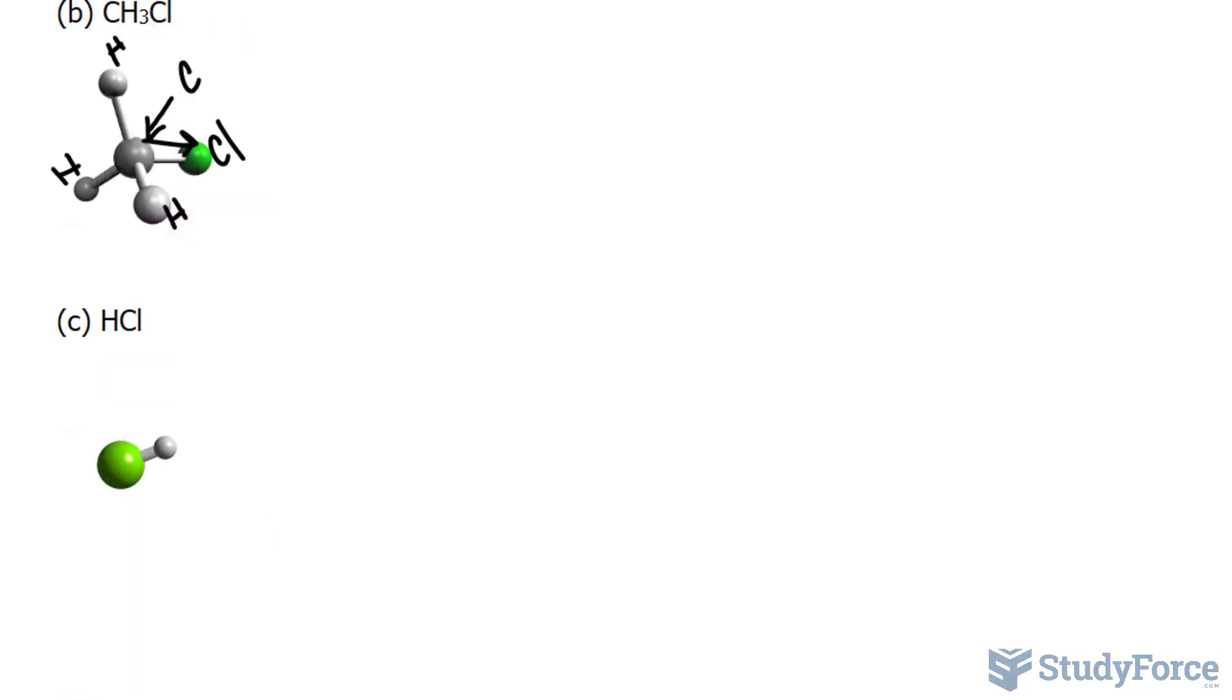Finally, we have HCl, or hydrochloric acid. This is a very simple molecule consisting of chlorine and hydrogen. Chlorine is much more electronegative than hydrogen, so it pulls the electrons towards it. We can safely assume that there's an unequal pull towards one atom over the other, so this has a dipole-dipole moment.